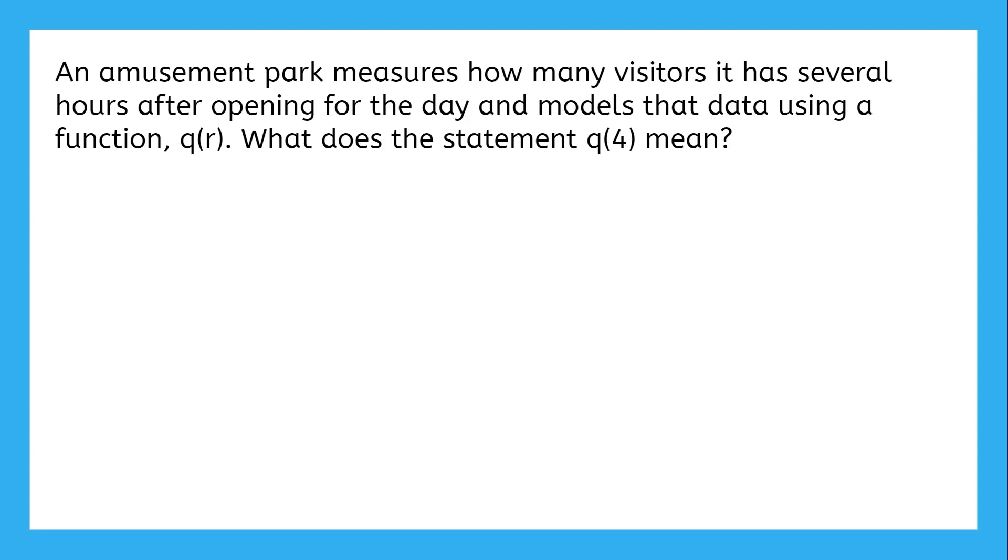What does this statement, q of 4, mean? The most important part here is knowing what the independent and dependent variables are. So out of the time after opening and the amount of visitors, which depends on the other?